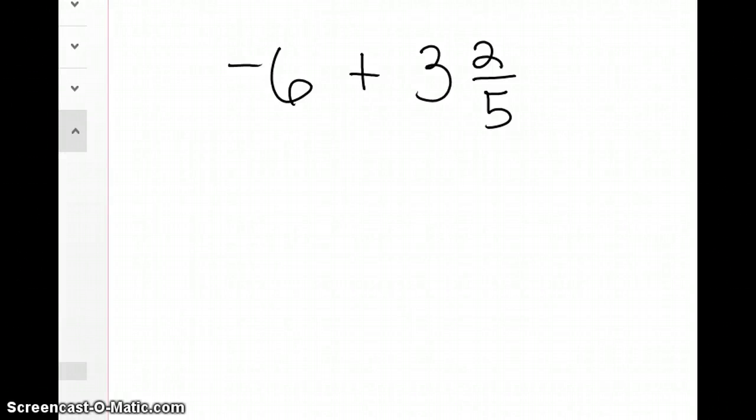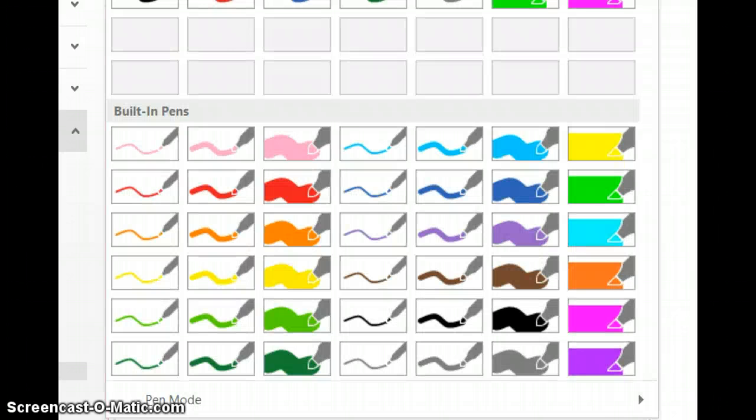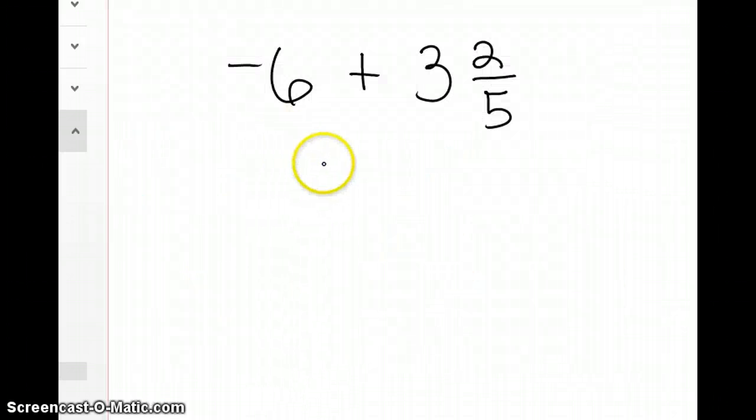Let's review how to subtract numbers when we have a whole number and a mixed number. We're going to have to borrow. So here, I'm going to set this up as negative 6 plus 3 and 2 fifths.